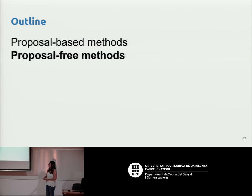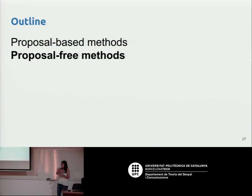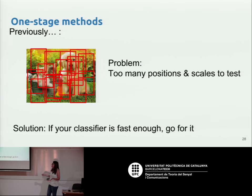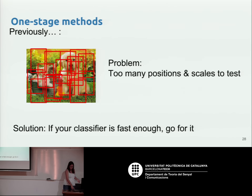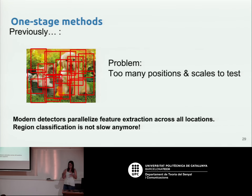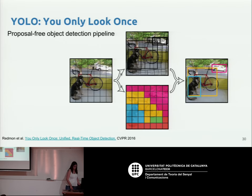Now I will talk about proposal-free methods. Until now, all the methods discussed have some algorithm to determine which regions likely contain an object, and in Faster R-CNN you ultimately train the classifier only on the top selected regions. With proposal-free methods, you do the opposite: you analyze all regions. While earlier this was too computationally intensive, modern CNNs on GPUs can be parallelized, making it possible to analyze all positions and scales at once. This is why single-stage methods are gaining importance.